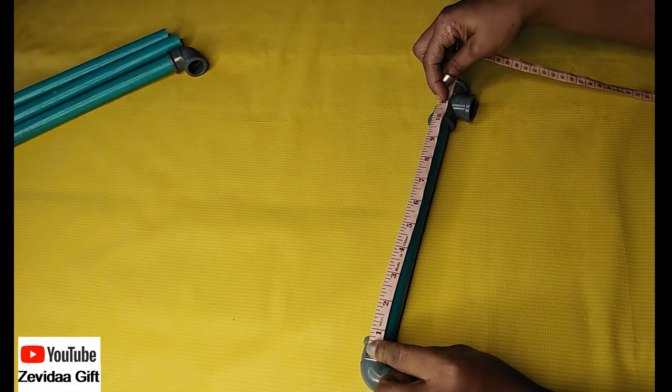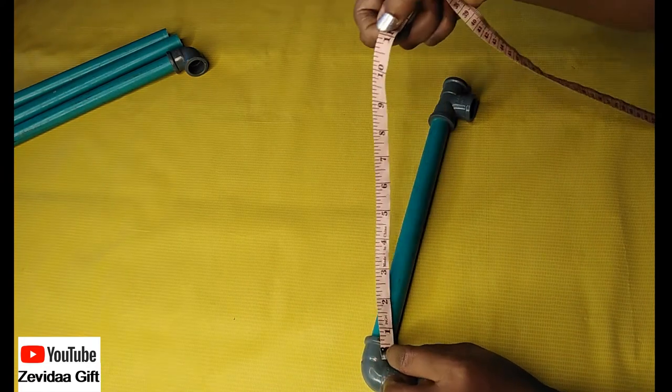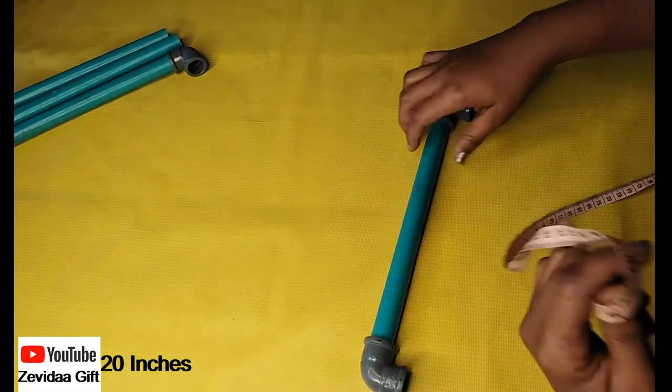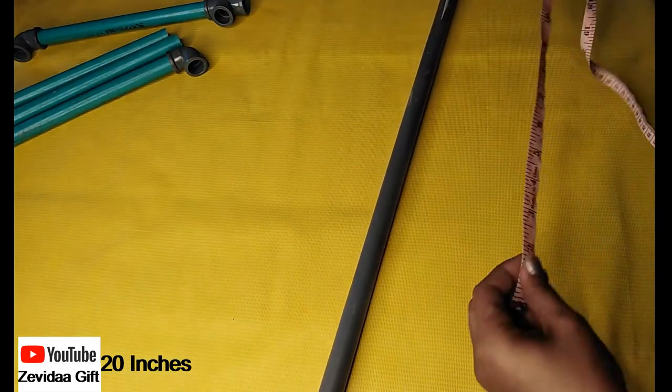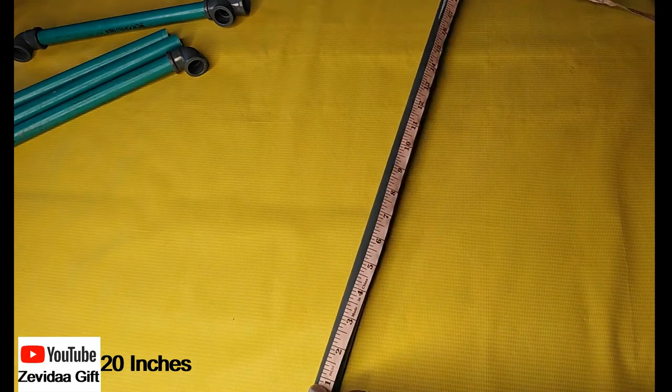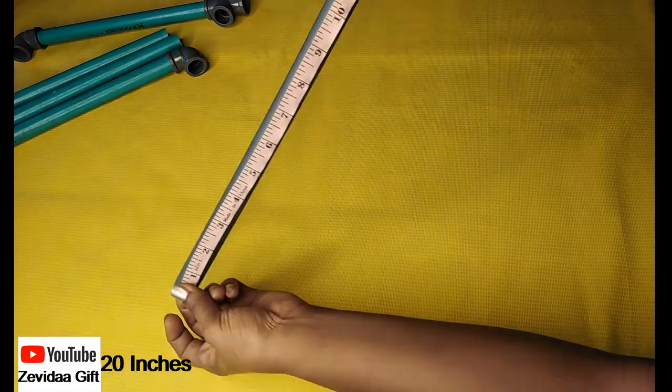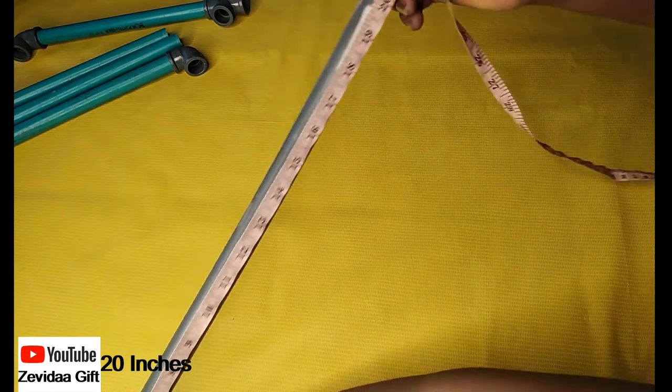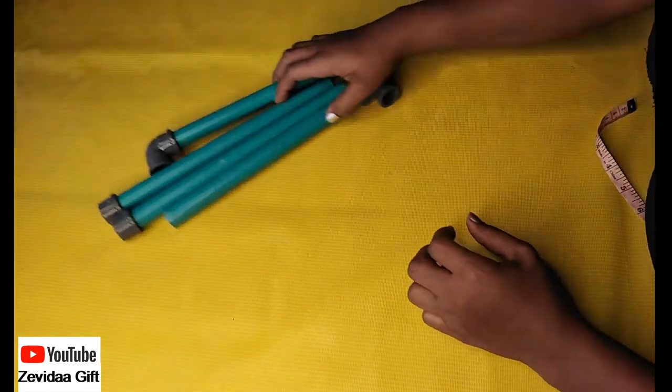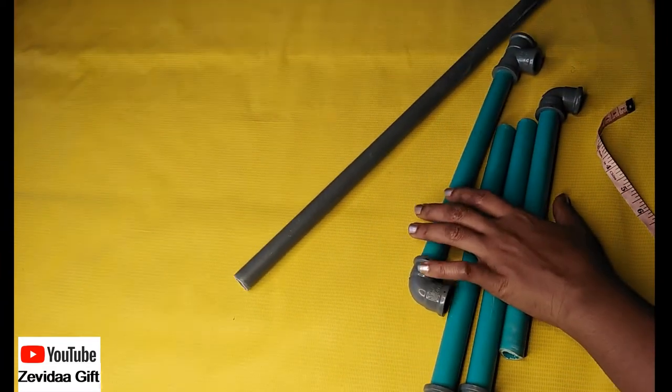This is just normal PVC pipe measuring 20 inches. Where I got it from, they were kind enough to cut it for you. So if you're making this, I recommend you write down the number of inches and number of pieces you want, and you can just ask them to cut it for you. But if by any chance they're not kind enough, then all you have to do is put a knife inside fire and just cut it that way.